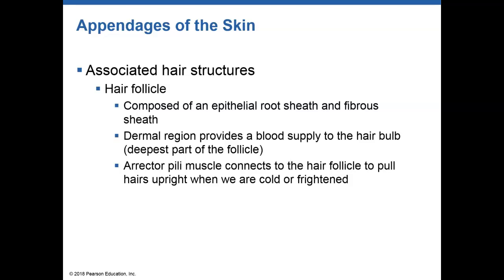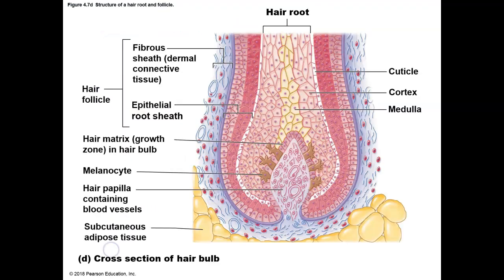The erector pili muscles make the animal look bigger so it can chase off a predator. Associated with our evolution, these muscles probably had a lot more importance when there were many animals trying to kill us. Here in the living region, blood vessels nourish the hair bulb; cells grow out and become increasingly keratinized until they are dead cells.